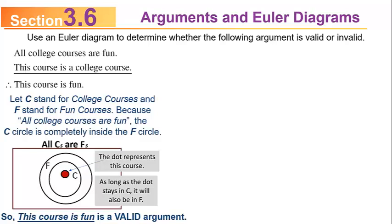When you say an argument is valid, what you're saying is that based on the premises of the argument, the conclusion follows. If any of the premises are not true, you might not agree with the conclusion, but the argument itself is valid if you accept the premises. So anytime you're making this argument, it's understood that the argument is valid if you assume the premises are true.